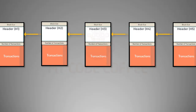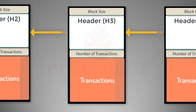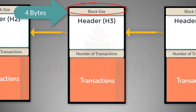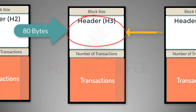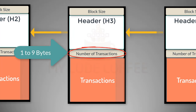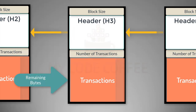As you know, blockchain is the chain of blocks. So what does an individual block look like? Logically you can divide a block into four parts. The first four bytes give you the block size. The next 80 bytes is the block header — I will talk more about the block header in a moment. The next 1 to 9 bytes give you the number of transactions that are going to follow, and then the remaining bytes are the actual transactions.